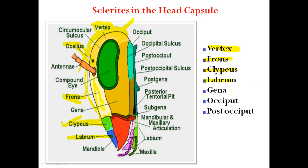In the anterior view, the parts visible are vertex, frons, clypeus, and labrum — all considered the facial parts. In the lateral view, the first part is the occiput, which is the hinder part of the insect head, present between the vertex and the neck.